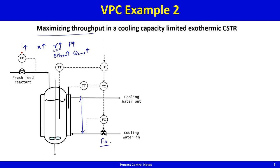If the cooling valve has become fully open and you keep cranking up the feed, you have lost reactor temperature control. For an exothermic system, this can lead to reaction runaway — the Bhopal gas tragedy was one example — which can be disastrous, particularly for highly exothermic systems.